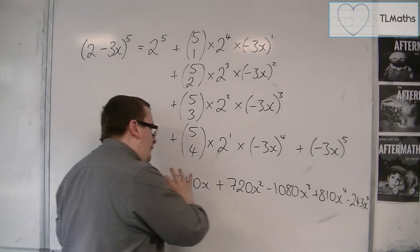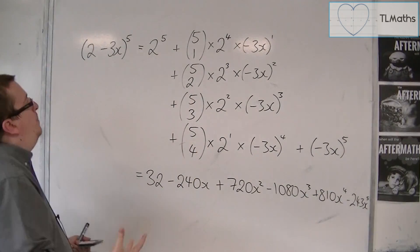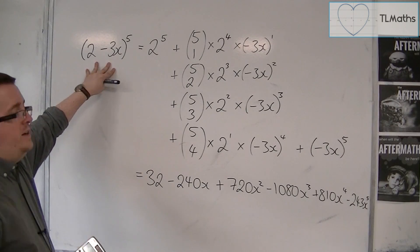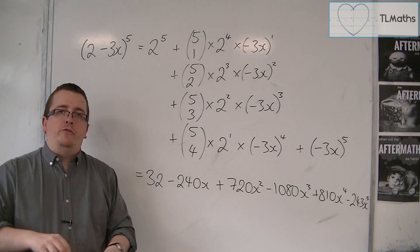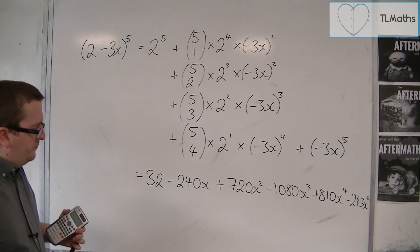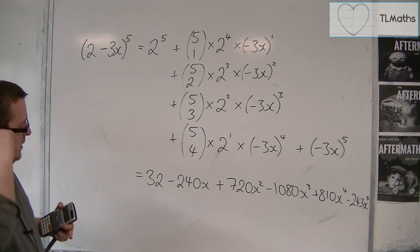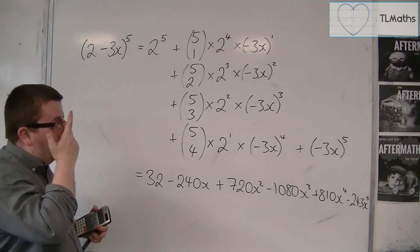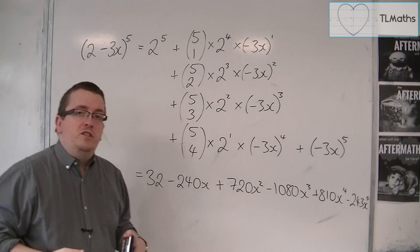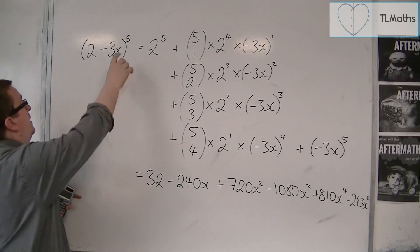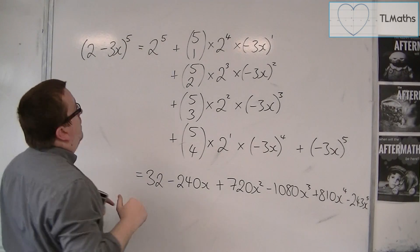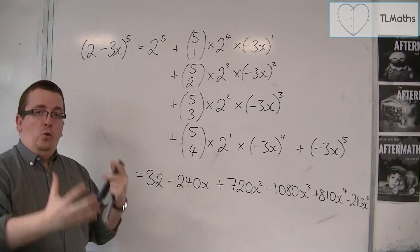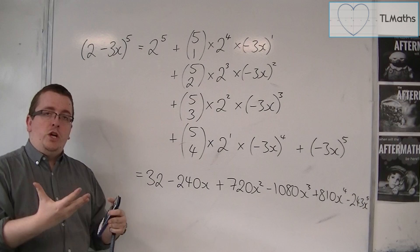So this is the full, complete expansion of 2 minus 3x to the power of 5. Now, that's all well and good, and we could use the binomial expansion to expand anything where this is a nice whole positive integer.